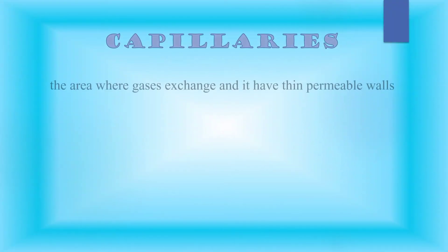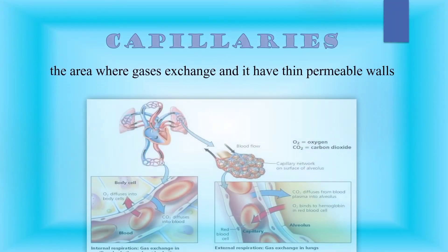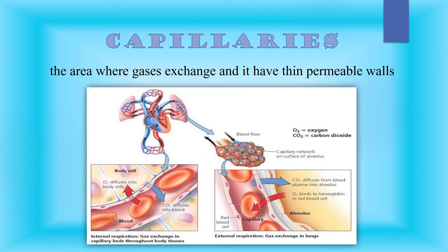Another blood vessel is the capillary. Capillaries are the smallest and most numerous blood vessels. They form connections between arteries and veins. The main function of capillaries is the exchange of materials such as gases, nutrients, and waste products of metabolism between the blood and tissues of the cell. Capillaries have thin, permeable walls.